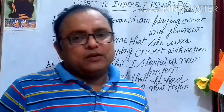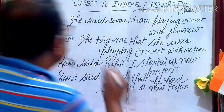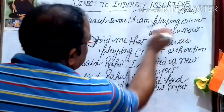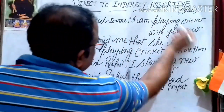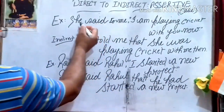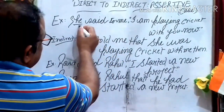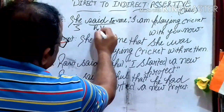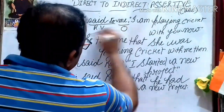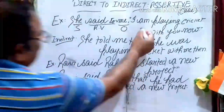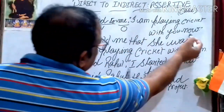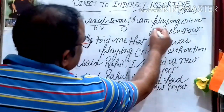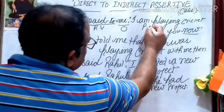Let's come to examples. 'She said to me, I am playing cricket with you.' Here 'she' is the subject, 'said to' is the reporting verb, 'me' is the object, and in the reported speech: 'I am playing cricket with you.' This sentence is in the present continuous tense. So how will we change it?